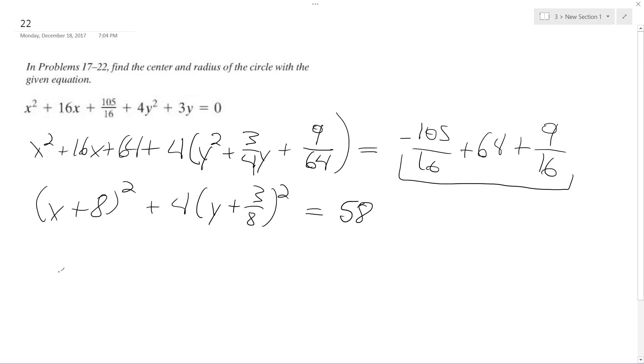So my center is going to be at negative eight comma negative three eighths. And my radius is going to be the square root of 58.